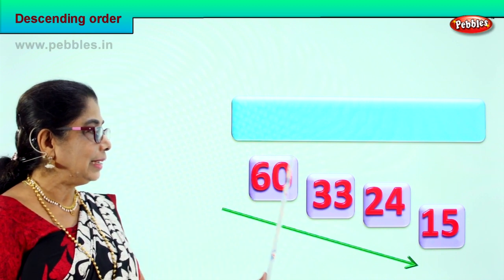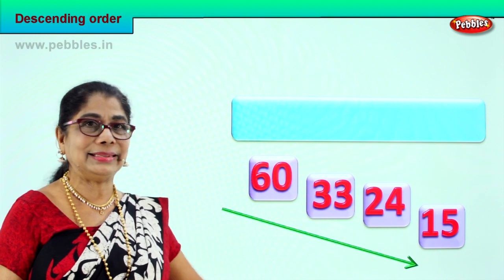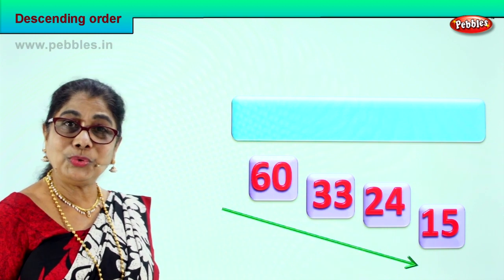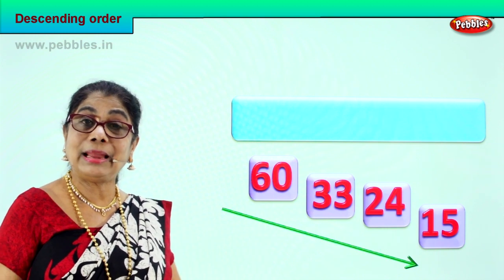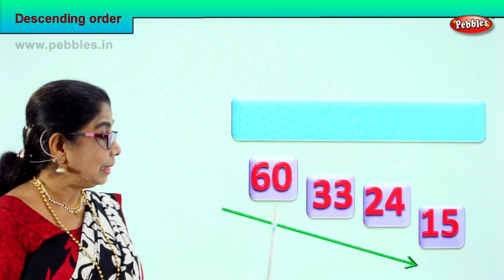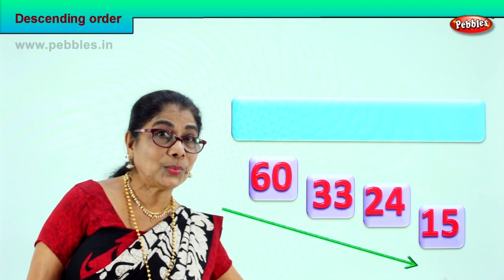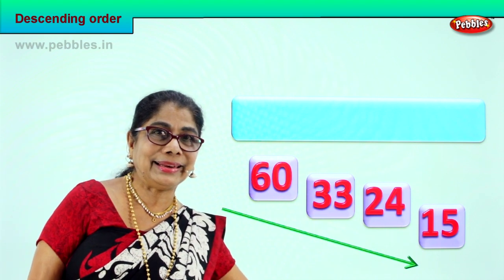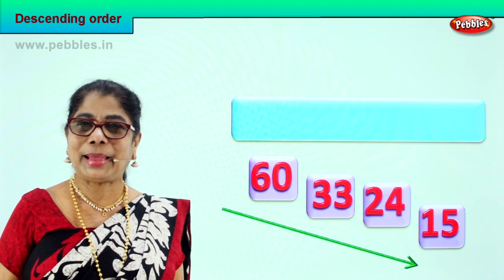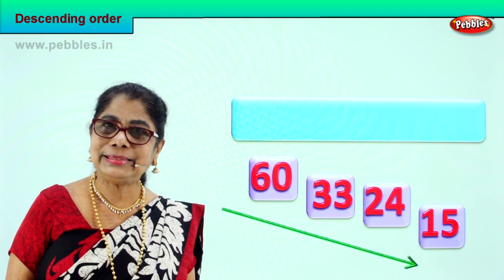Big number at the top and the smallest number right down there. Coming down: sixty, thirty, twenty, fifteen. What have you done? Arranging the numbers: six tens, three tens, two tens, one ten — in a beautiful pattern. Did you enjoy doing this?